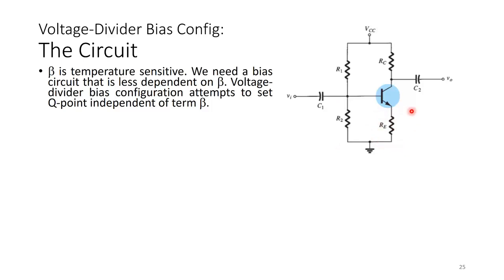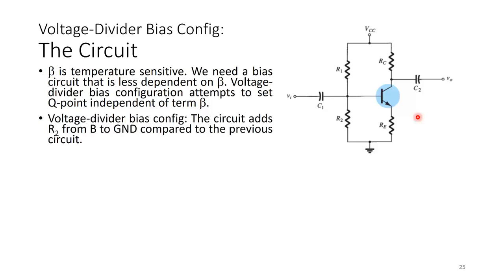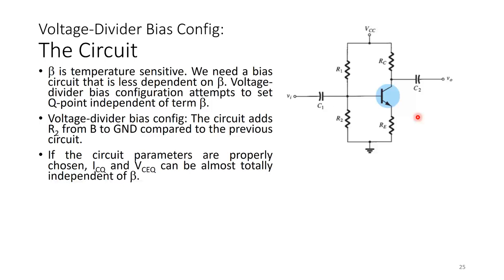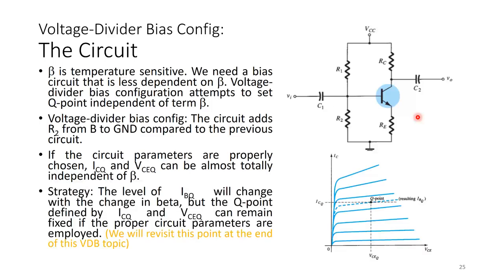There is RC between the collector terminal and VCC. Voltage divider bias adds R2 from base to ground compared to the emitter bias. If the circuit parameters are properly chosen, ICQ and VCEQ can almost be totally independent of beta. The level of IBQ will change with changing beta, but the Q point defined by ICQ and VCEQ can remain fixed if proper circuit parameters are employed.